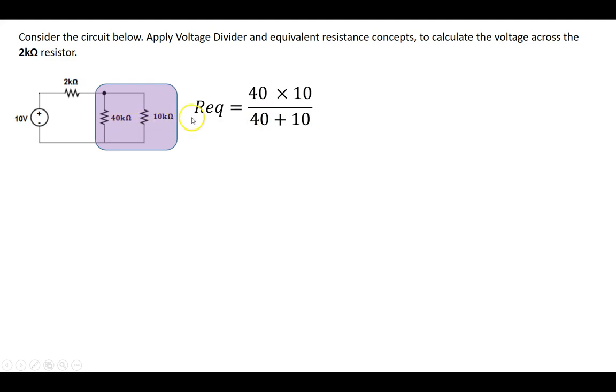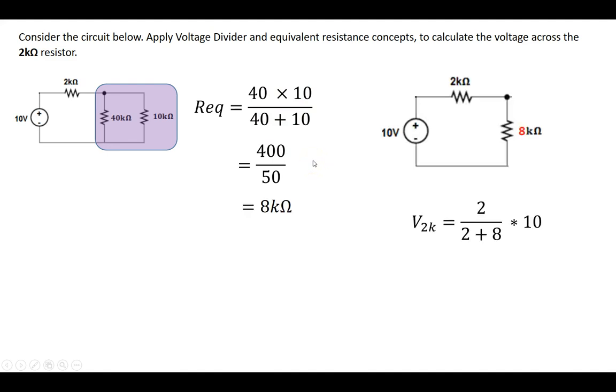Since both of these are in kOhms, we can just leave them as 40 and 10 and they work out just fine. So the equivalent resistance in this case is going to be 400 on the top, 50 on the bottom, which leads me to 8 kOhms. So here's my 8 kOhm resistor.